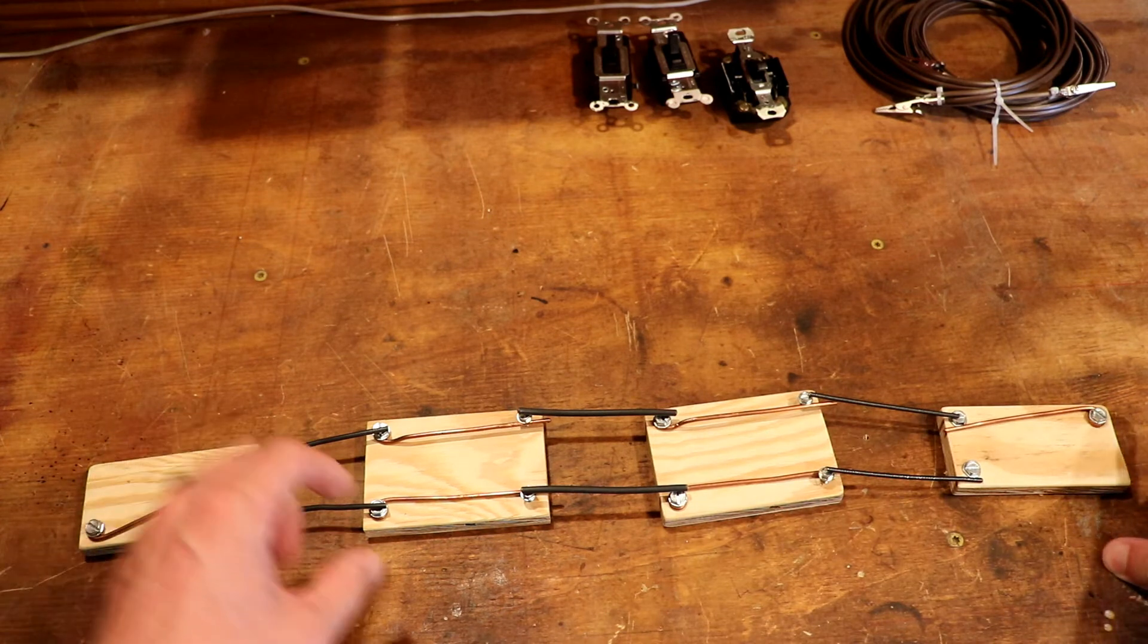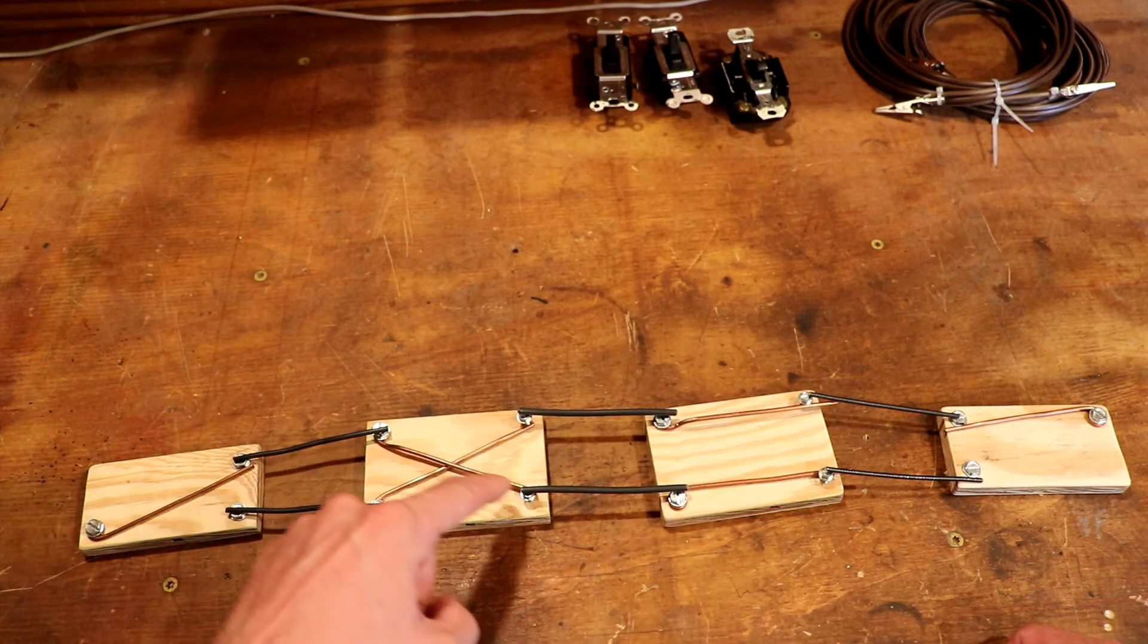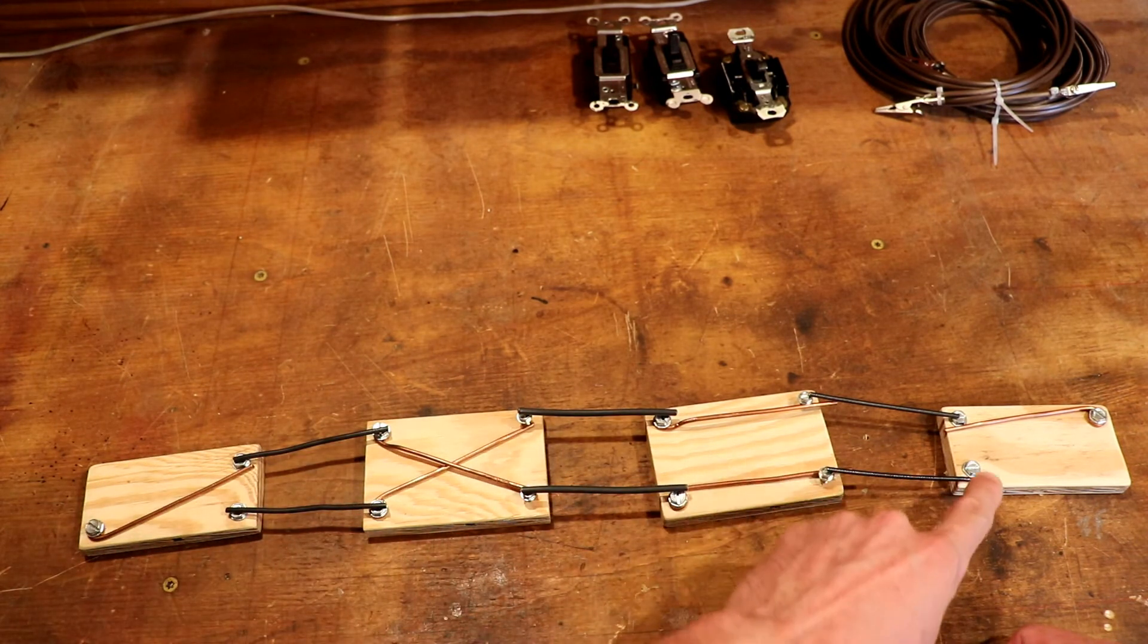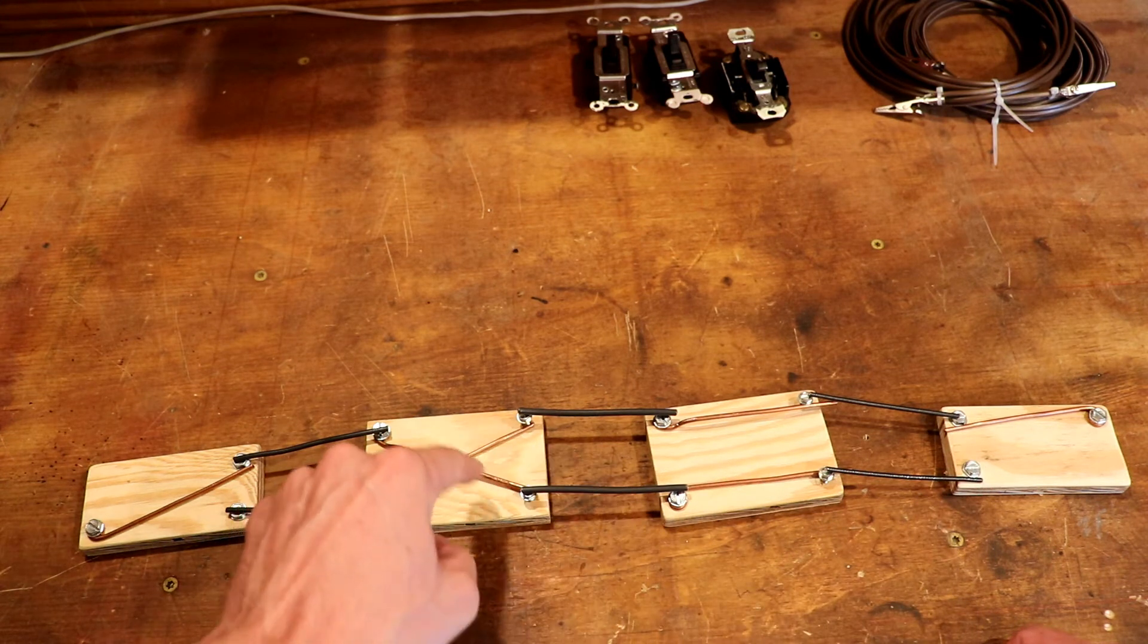We could flip any one of these switches. Let's do this one. Power flows over here, jumps crossways and ends up stopping right there. Now the light's off. We could flip that one back on to turn it on.